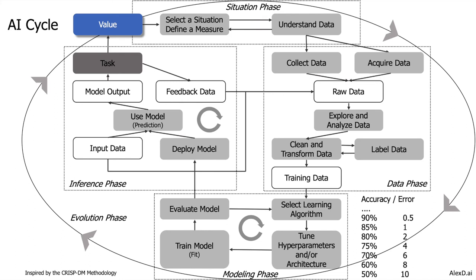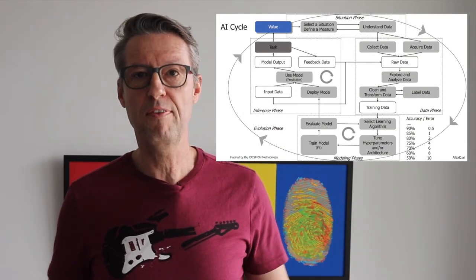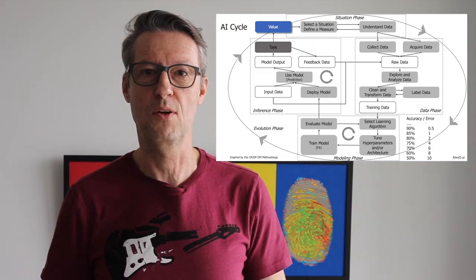This retraining could be manual, but it also could be automatic. This is the AI cycle — this is the process of how you manage your AI projects — with five different phases: the situation phase, the data phase, the modeling phase, the inference phase, and then the evolution phase. With this, we've concluded the enablers.